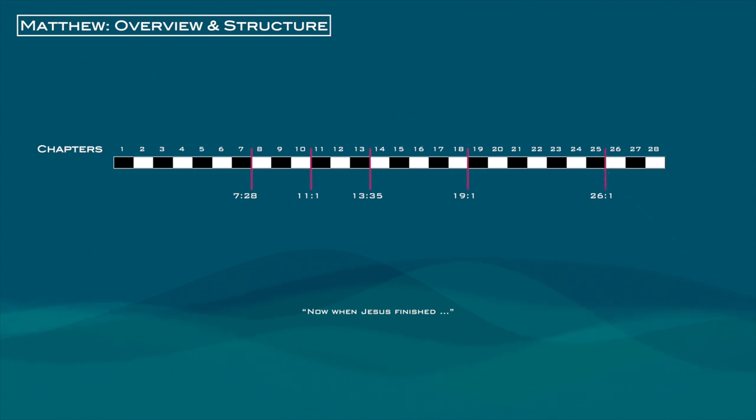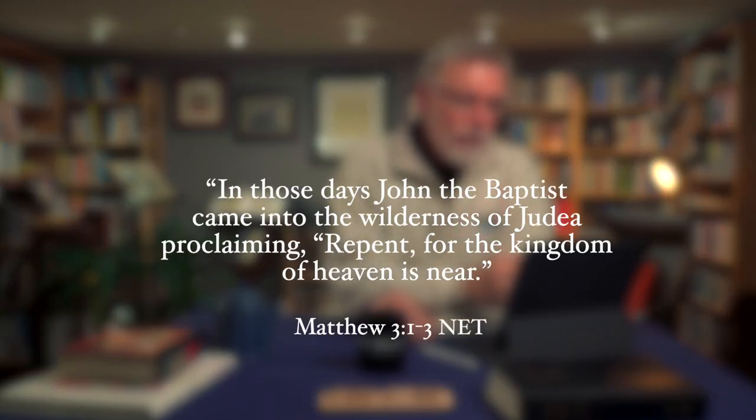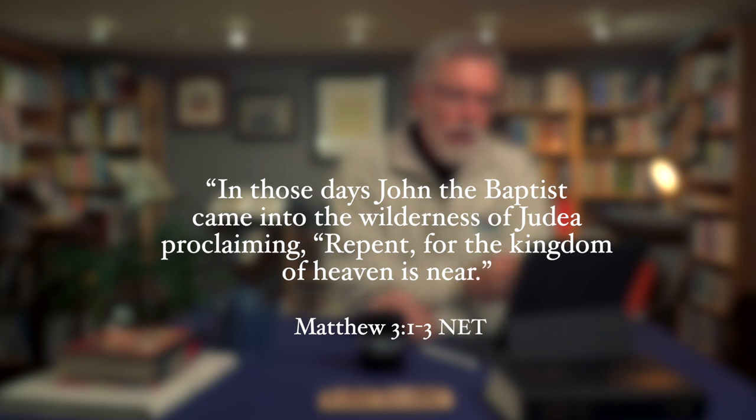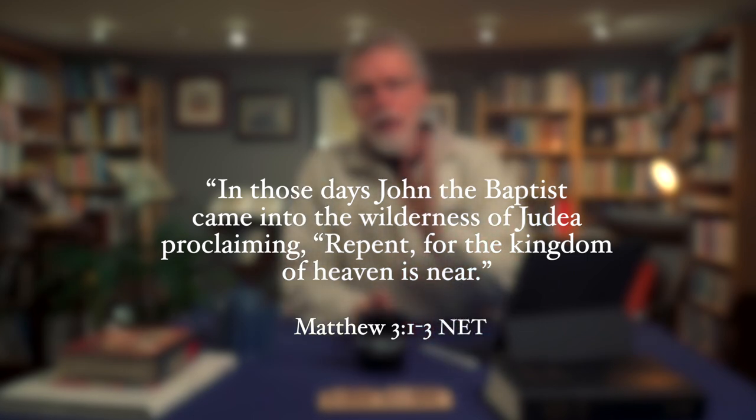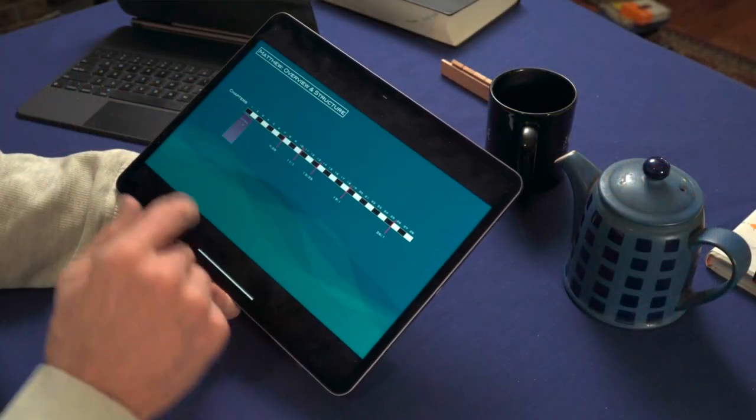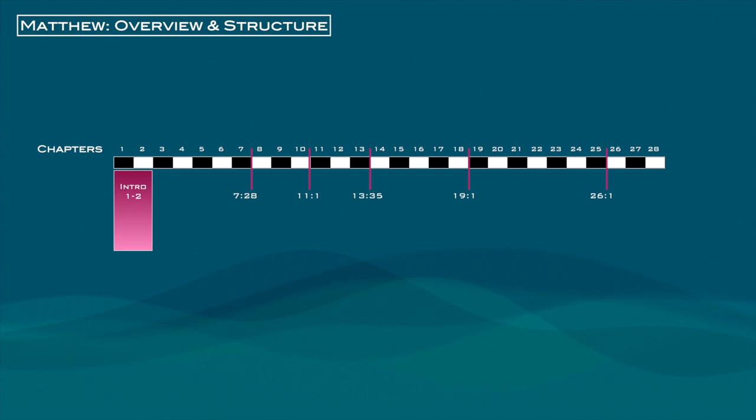In my last video, I asked the question of what is a gospel and how are they similar or different from other ancient biographies. In that video I mentioned that the gospel authors employed many of the same features as these other works, and in particular how Luke used the standard Greco-Roman prologue. All four Gospels have a prologue. Mark's is incredibly short — maybe one verse at best — but they all really start their account of Jesus' life and ministry with his baptism by John. This occurs in Matthew 3:1-3: 'In those days, John the Baptist came into the wilderness of Judea proclaiming, Repent, for the kingdom of heaven is near.' Let's mark out how Matthew 1 through 2 serves as the prologue — I'm going to put this in pink and label it as the intro.